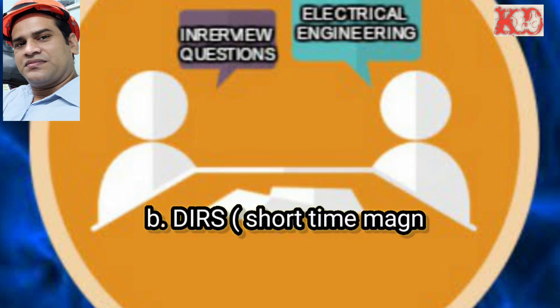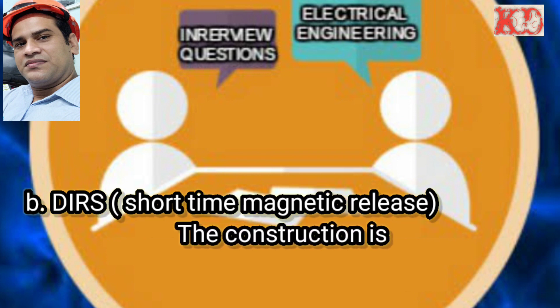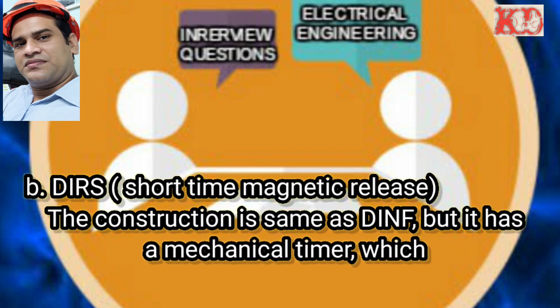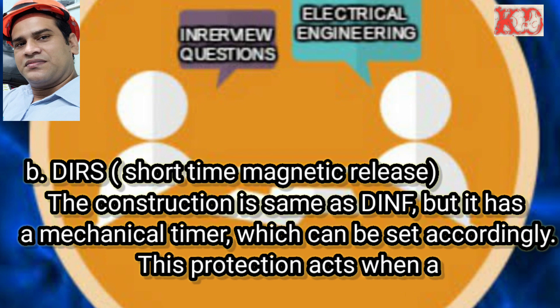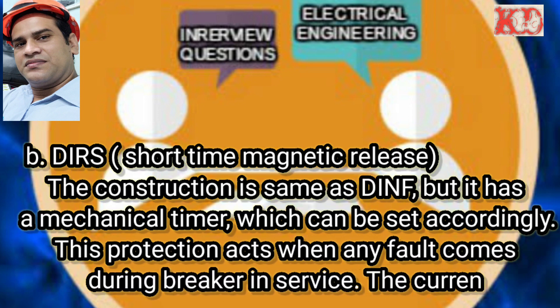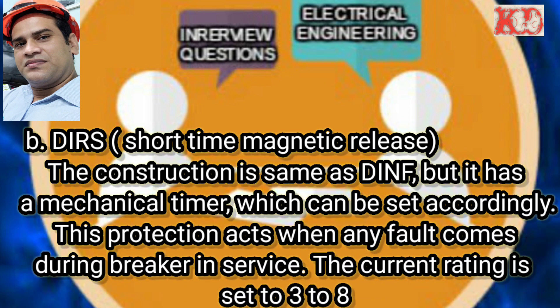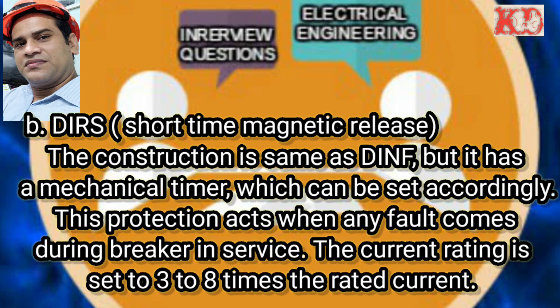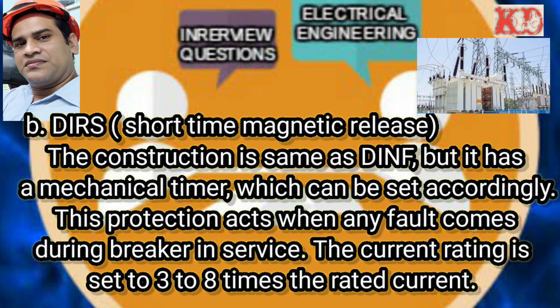Second, DIRS: DIRS is short time magnetic release. The construction is the same as DINF but it has a mechanical timer which can be set accordingly. This protection acts when any fault comes during breaker in service. The current rating is set to three to eight times the rated current.